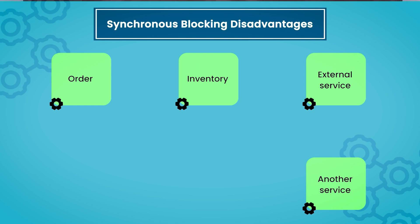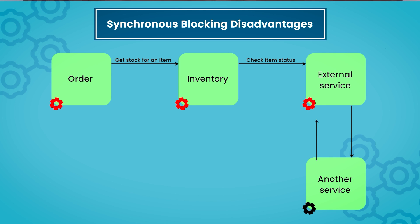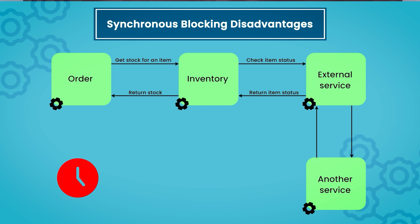The advantage of this communication is that microservices can communicate with each other for the required data and collectively fulfill business functionalities. However, there are downsides. If you have many services — for example, the order service sends a request to inventory, which needs to call another service, which also calls another service synchronously — a chain of calls is created that can take a lot of time and cause timeouts. In that scenario, the synchronous blocking approach is not very useful.